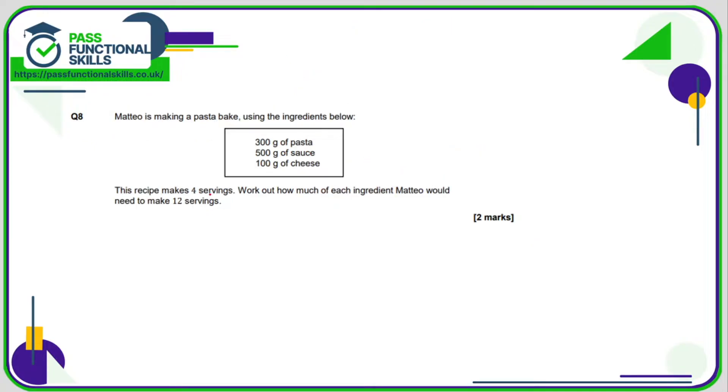Question number eight, this is a recipe for four. Matteo wants it for 12. Now 12 is three times greater than four, so he's going to need to triple all these ingredients. So pasta, 300 times three which is 900 grams. For the sauce it's going to be 500 grams times three, 1500 grams or 1.5 kilos. And for the cheese, 100 times three which is 300. Of course you can use a calculator for any of these calculations, but they're relatively straightforward, so it's probably quite safe to do them in your head if you want to.